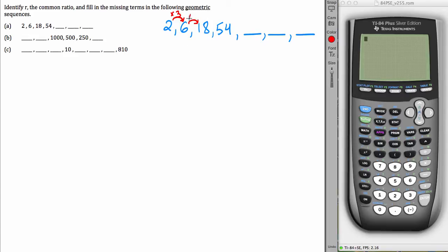6 to 18 follows the same pattern. Take 6, multiply it by 3, get 18. Take 18, multiply it by 3, get 54.